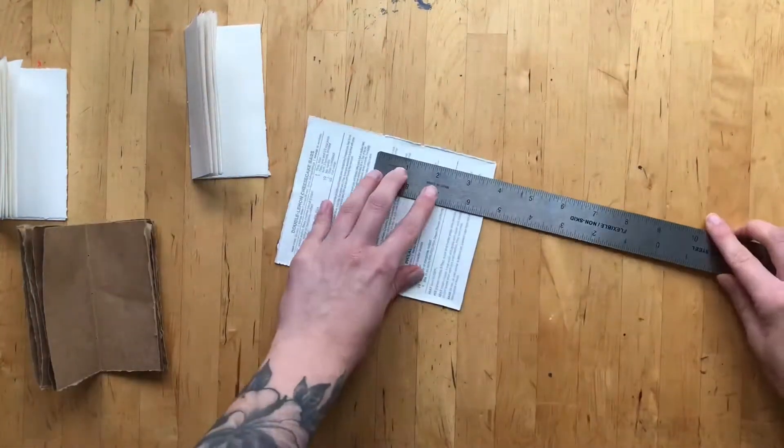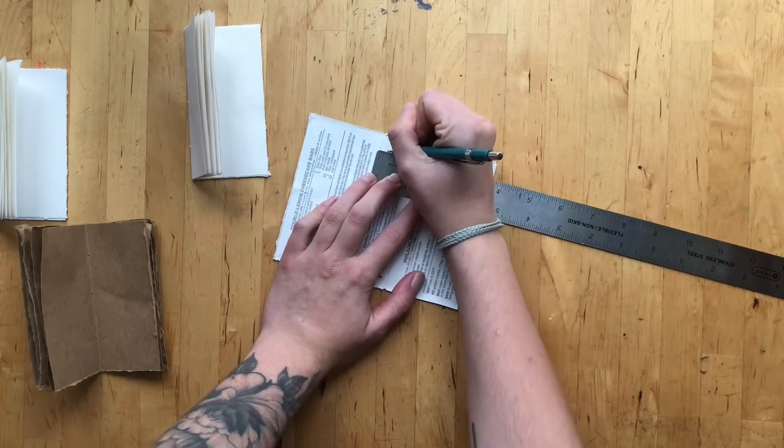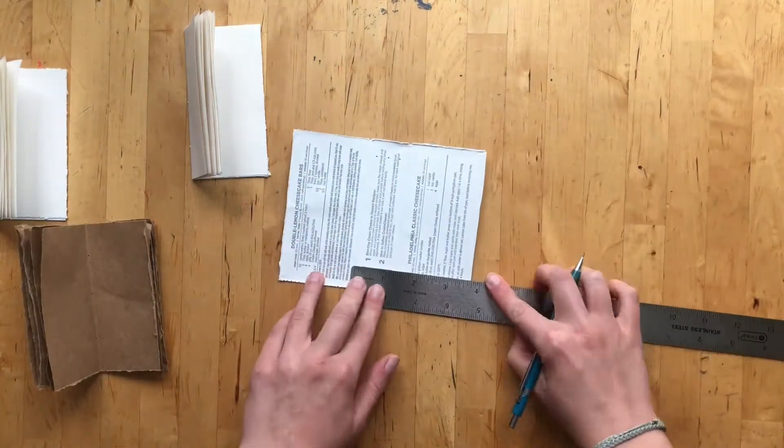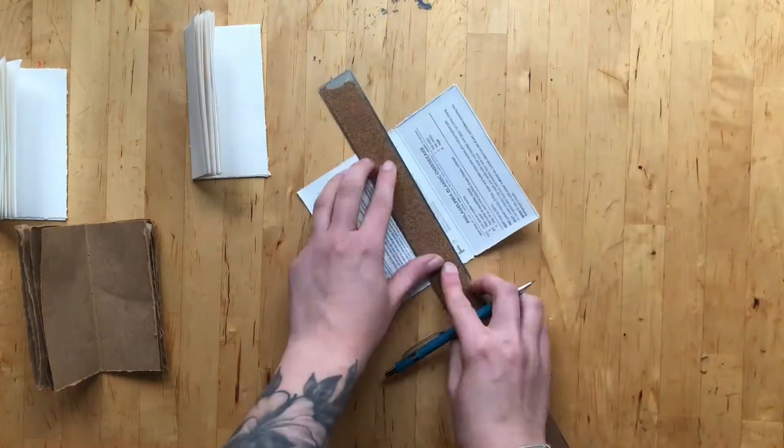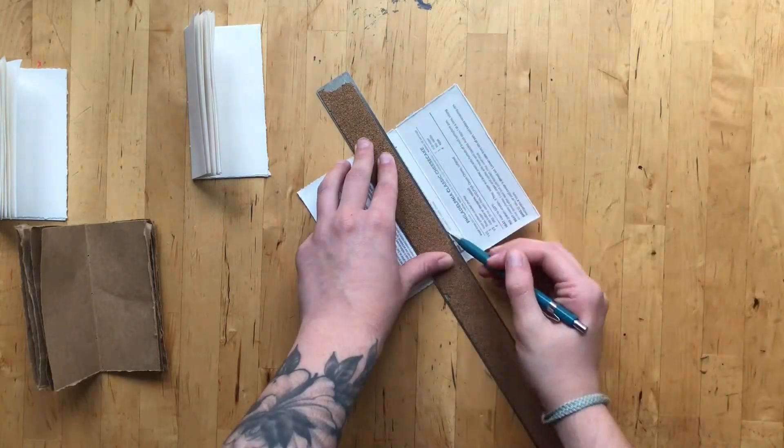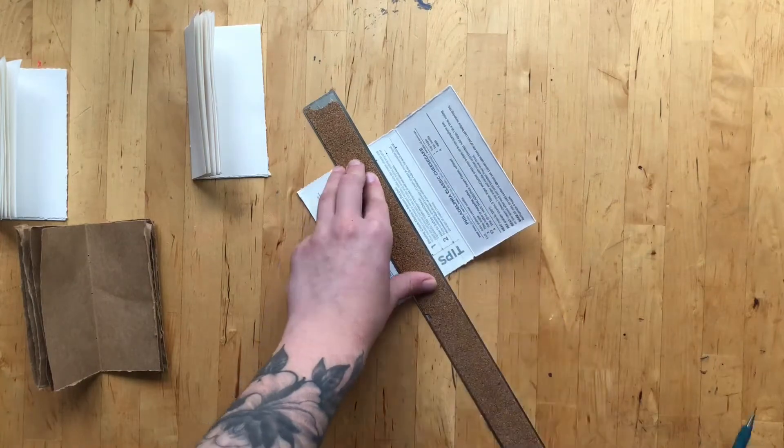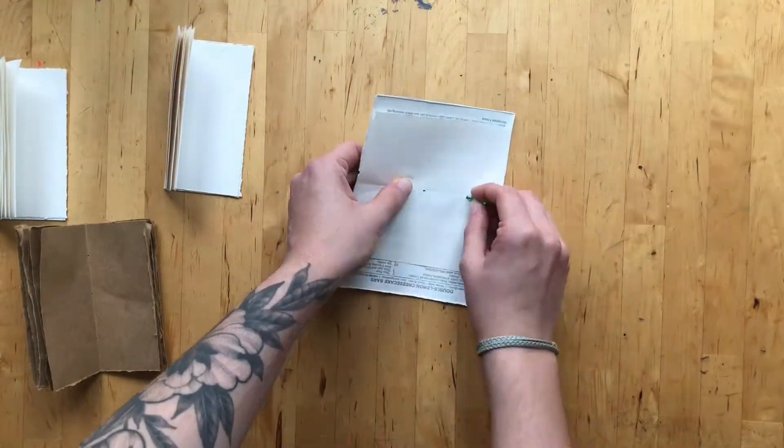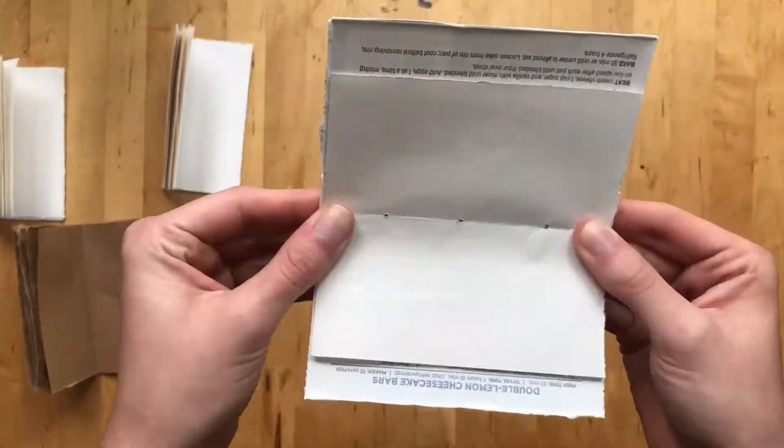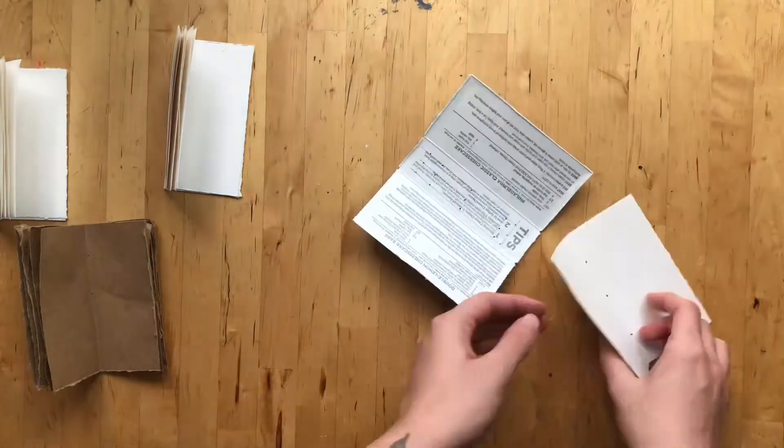Next, make holes in the cardboard cover where each set of pages will go. Since I have three signatures or sets of pages, I used a ruler to make three marks evenly spaced apart on the inside of the spine near the top and bottom of the cover. I then used a ruler to connect the marks on the top and bottom. Then, use one page with holes as a template to make holes on the cover. Carefully line up the page on the marks of the cover and use a push pin or needle to make the holes.